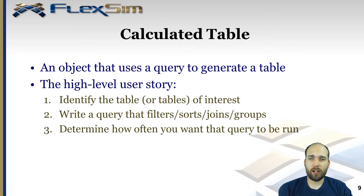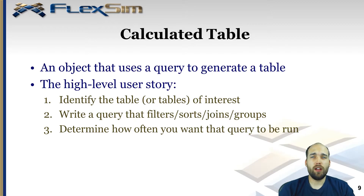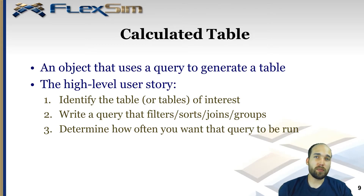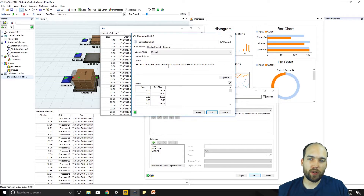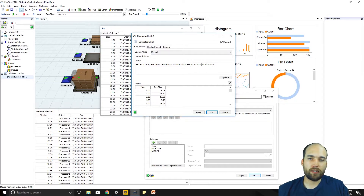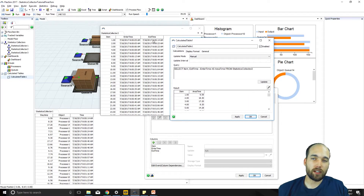Next we have the calculated table, an object that uses a SQL query to generate another table. You identify the table or set of tables you want to refine — maybe you want to sort, filter, or do another operation available from SQL queries — then you write a query that does that operation, and determine how often to update the data. For example, I have a calculated table that takes the item, subtracts the enter time from the exit time — called the time in the area — and selects that from statistics collector 2. The result is a table with the item number and the time difference between enter and exit for each item.